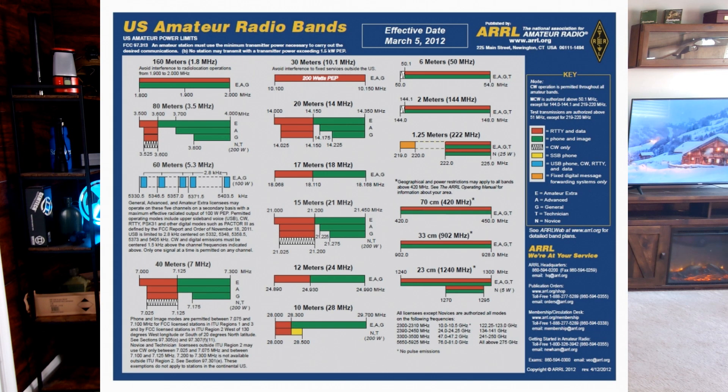I'm a ham radio operator and a licensed GMRS operator. To start this video, I don't want to make things too complicated, but in order to understand the difference between these radios — I bring this chart up all the time — this is a radio band chart. In today's video we're talking about handhelds only, not mobile or HF equipment or anything else. Your typical ham radio, like a Baofeng UV5R shown here, is going to operate on specific bands.